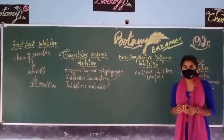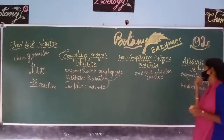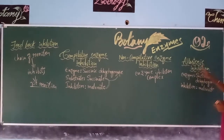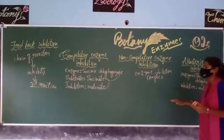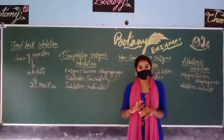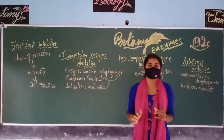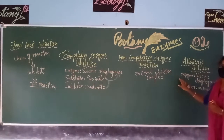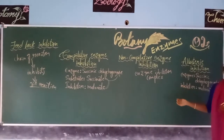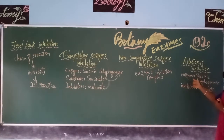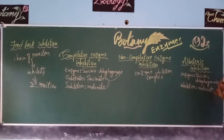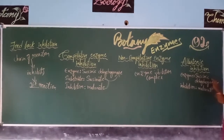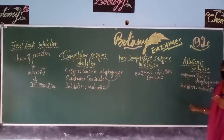Coming to the last type — allosteric inhibition. Here the inhibitor is not similar to the substrate structurally; there are no similarities at all between the inhibitor and the substrate. The inhibitor directly terminates or inhibits the activity of the enzyme. As an example, the enzyme is succinic dehydrogenase and the inhibitor is malonate, which directly inhibits the enzyme without any substrate involvement.